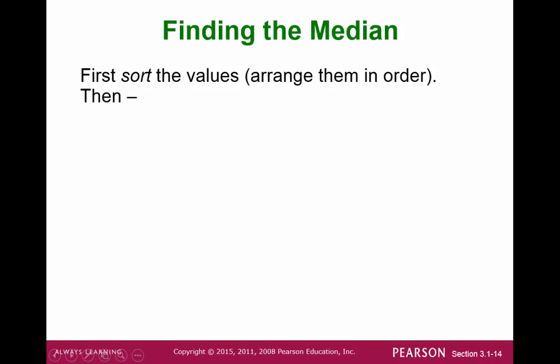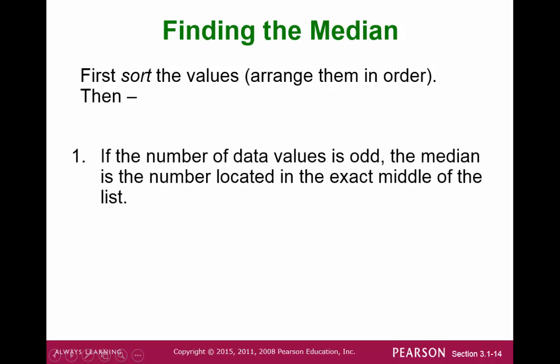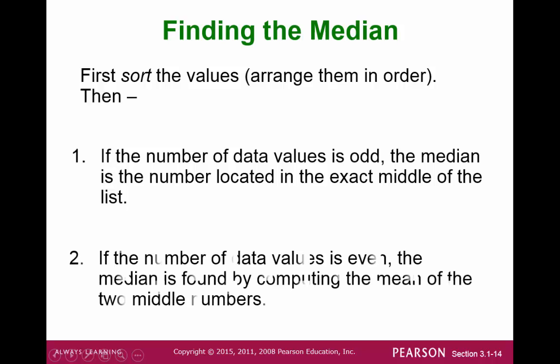So, how do we find the median? First, we arrange the data in order. Then, depending on the number of values, we'll go one of two ways. If we had an odd number of values, then there is a middle number. This is the median. If we have an even number of values, there are two middle numbers. To find the median, we will compute the mean or the average of these two middle numbers.